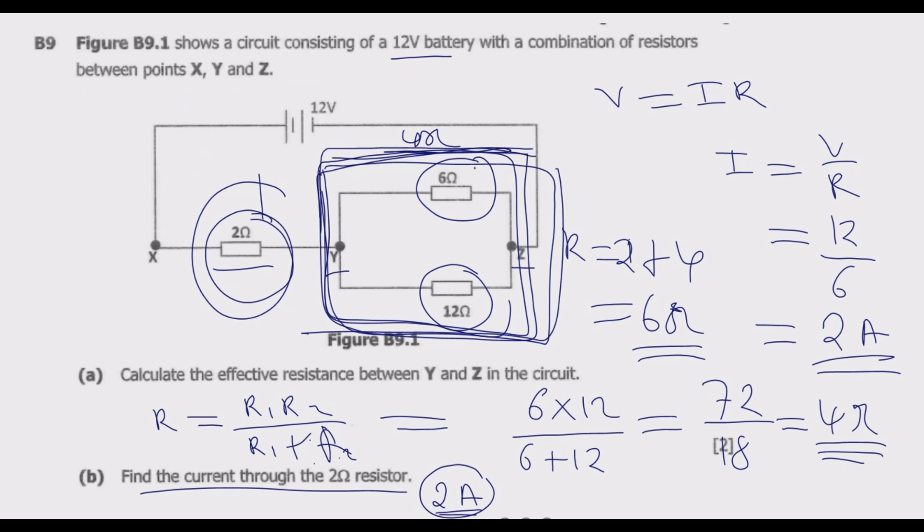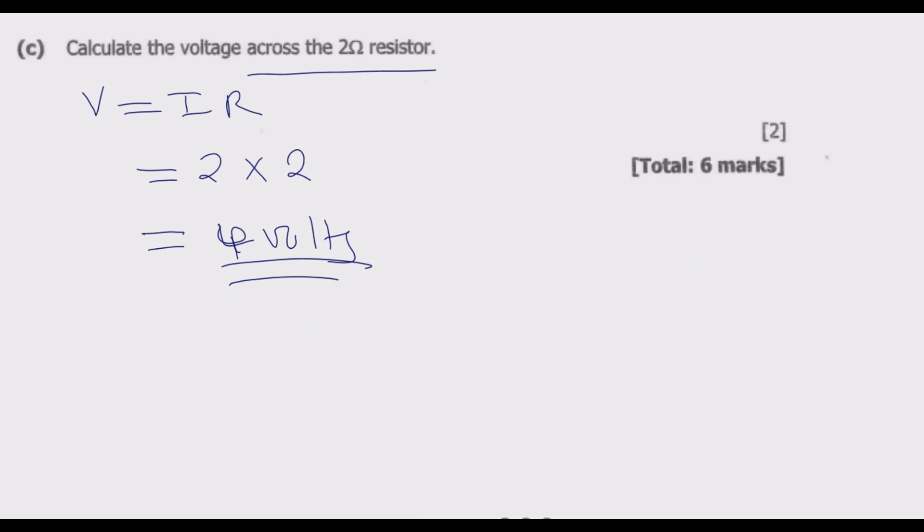Then the voltage for these two, because they are in parallel, they are going to have the same potential difference. So what is going to happen is voltage equals, again current is 2 amps, then multiply by the effective resistor which is 4. Then we multiply this, we are going to get 8 volts. So if you add these two, we are going to discover that this is 12 volts for the entire circuit. So basically, this is how you answer this question to get the 6 marks.